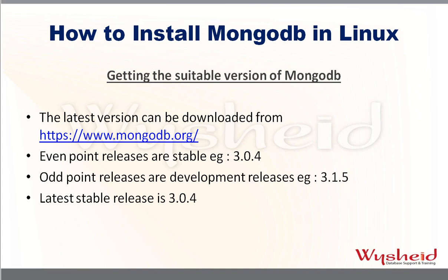An important point to note regarding versions: all even-point releases, such as 3.0.4, are stable versions, while all odd-point releases, like 3.1.5, are development releases. If you want to install MongoDB for your production environment, I recommend always going with the even-point releases — those ending with digits like 2, 4, etc. — so that you are installing the stable version.